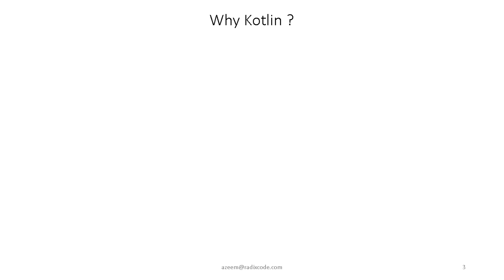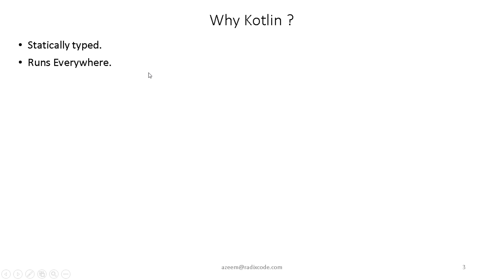Let's dive into some features of Kotlin. First, we already talked about static typing — just like Java, Kotlin is also statically typed. But Kotlin has an additional feature that Java does not have: in Kotlin, there is no need to explicitly define the data type of a variable. Kotlin is smart enough to determine the data type of your variable from the expression you are using, whereas in Java you must define the data type of your variable.